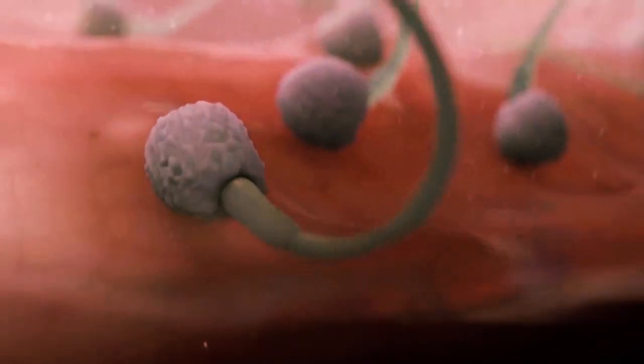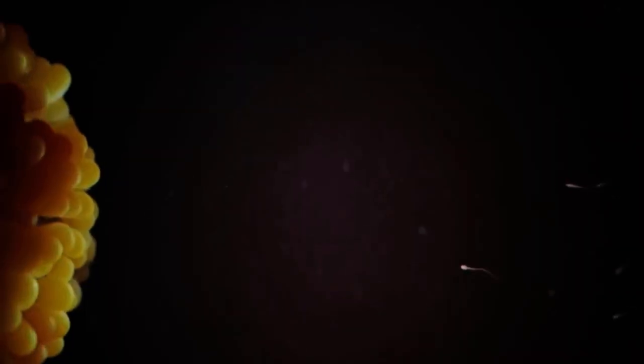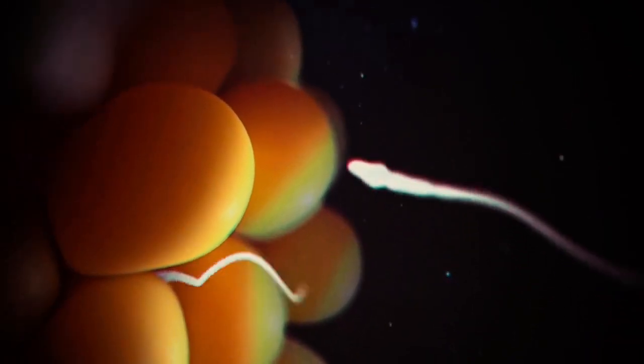From millions of sperms, less than 100 reach the safe haven of the fallopian tube, where the egg resides. And only one would be successful in fertilizing the egg, marking the beginning of a new human life.